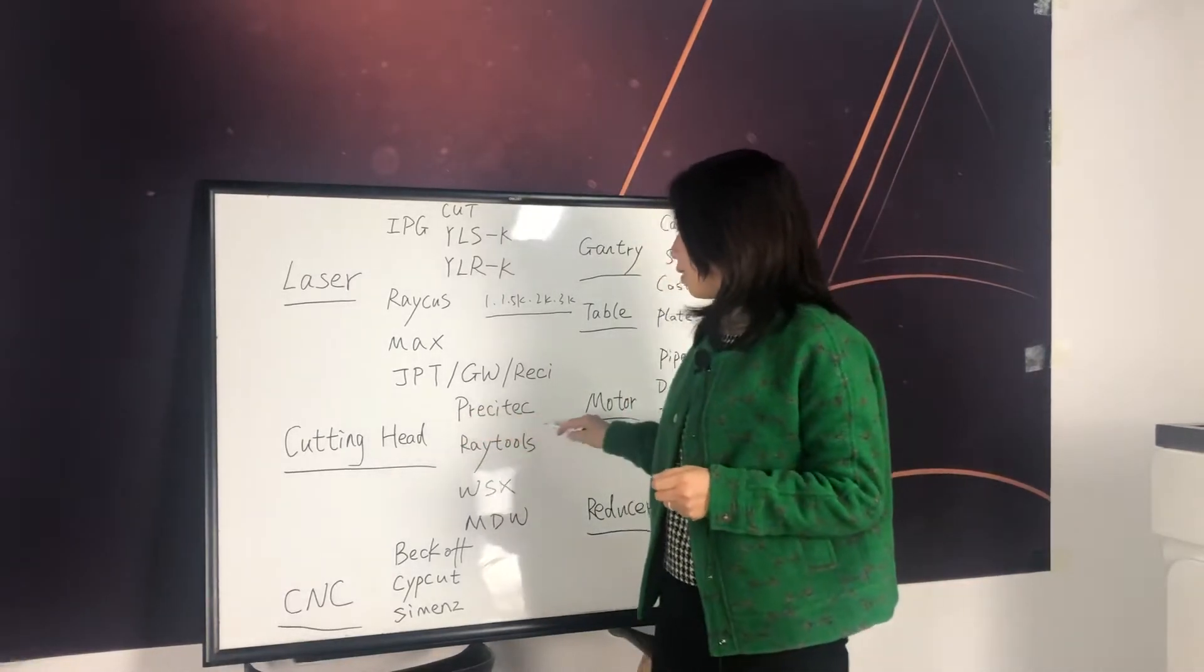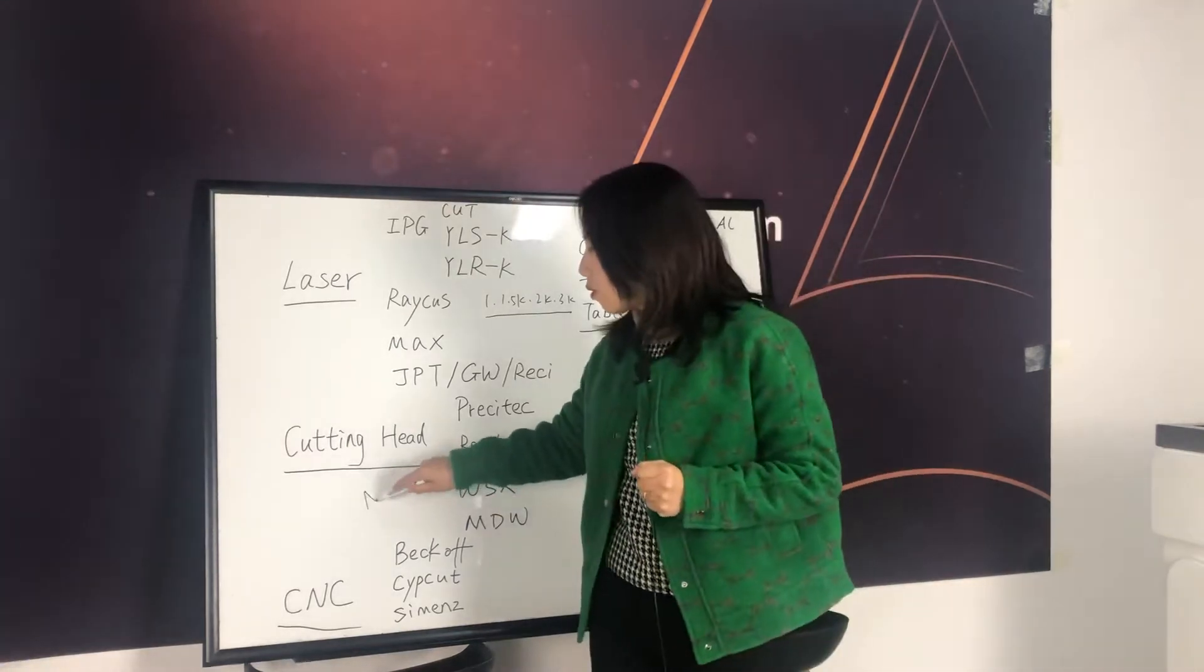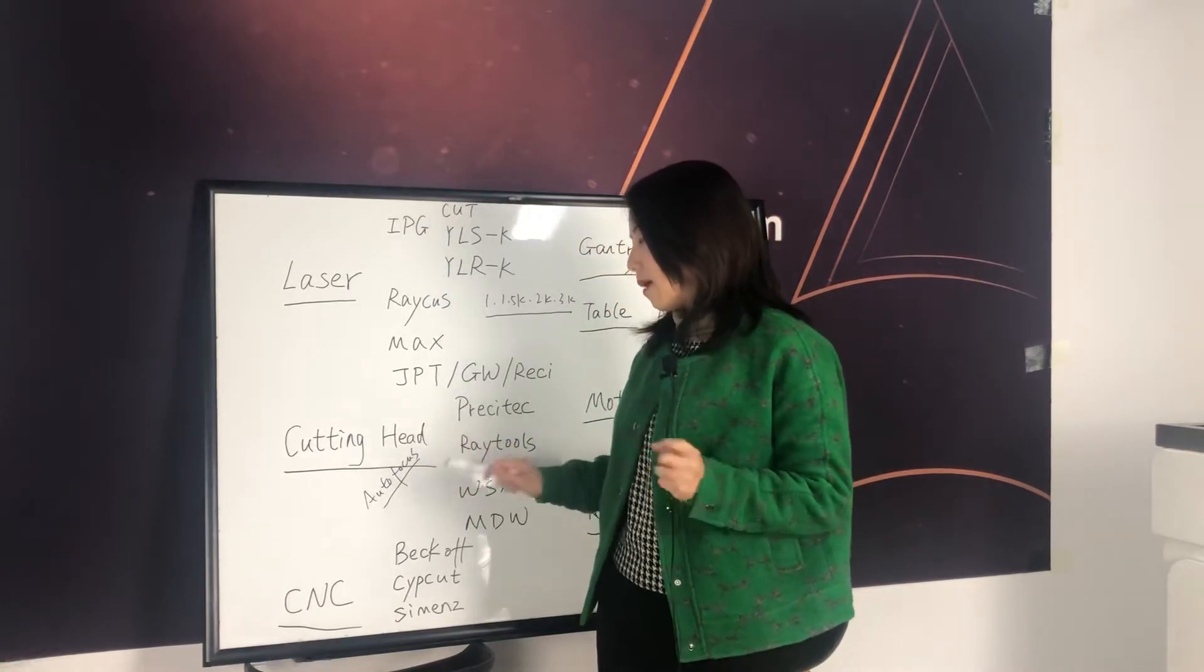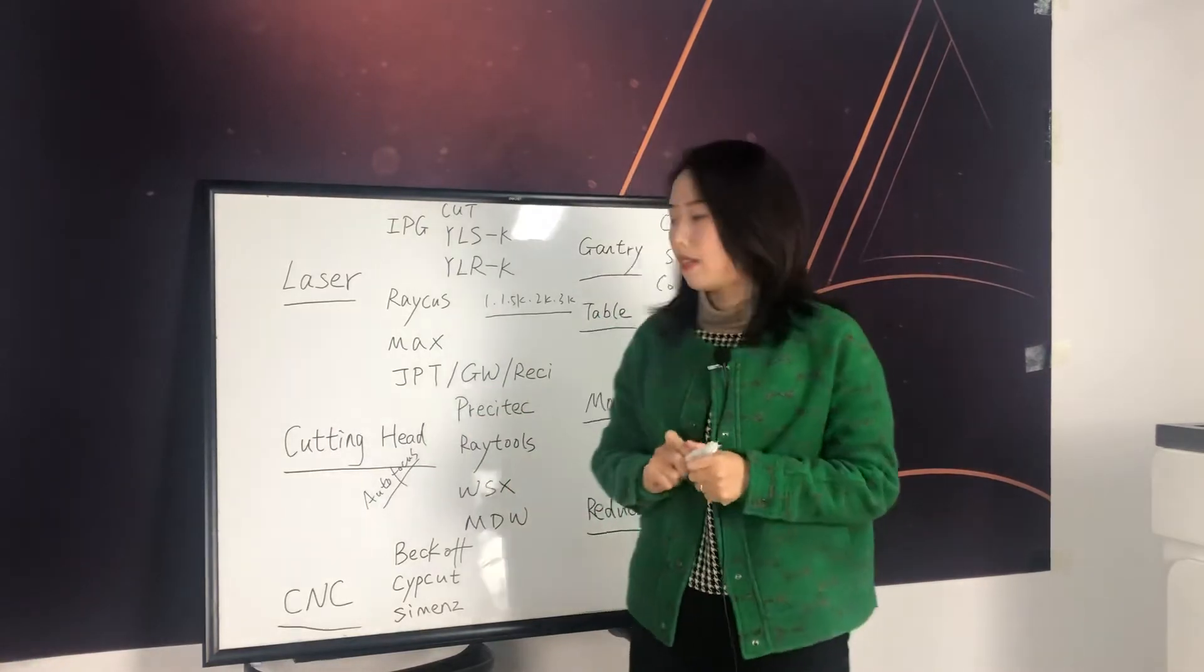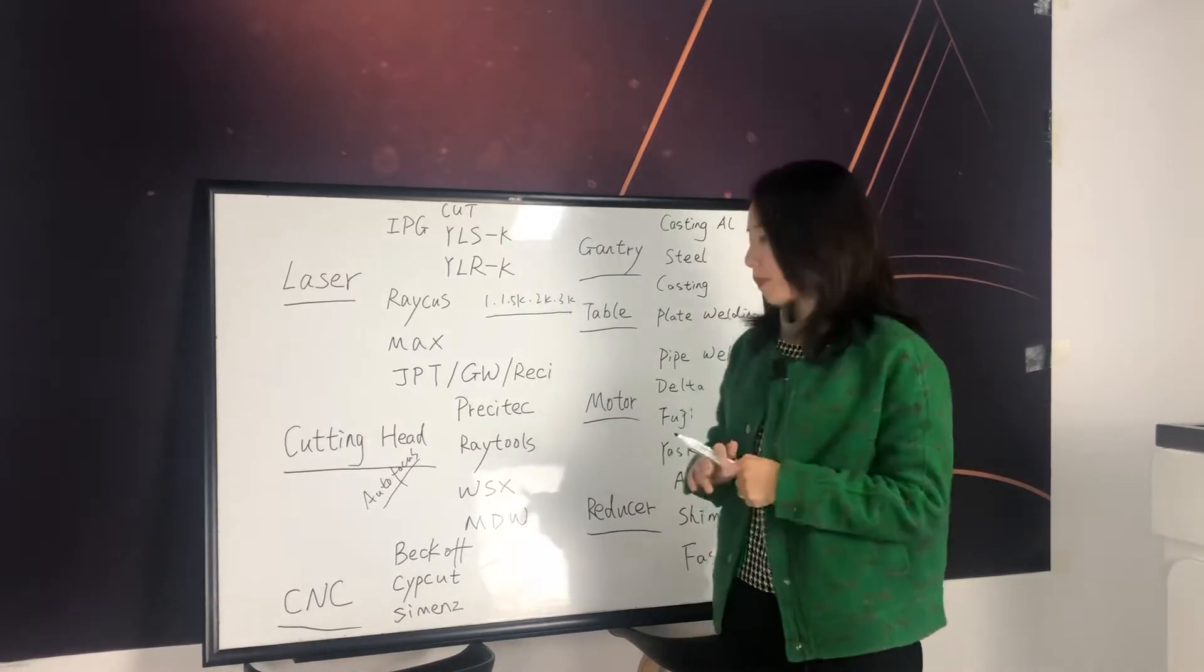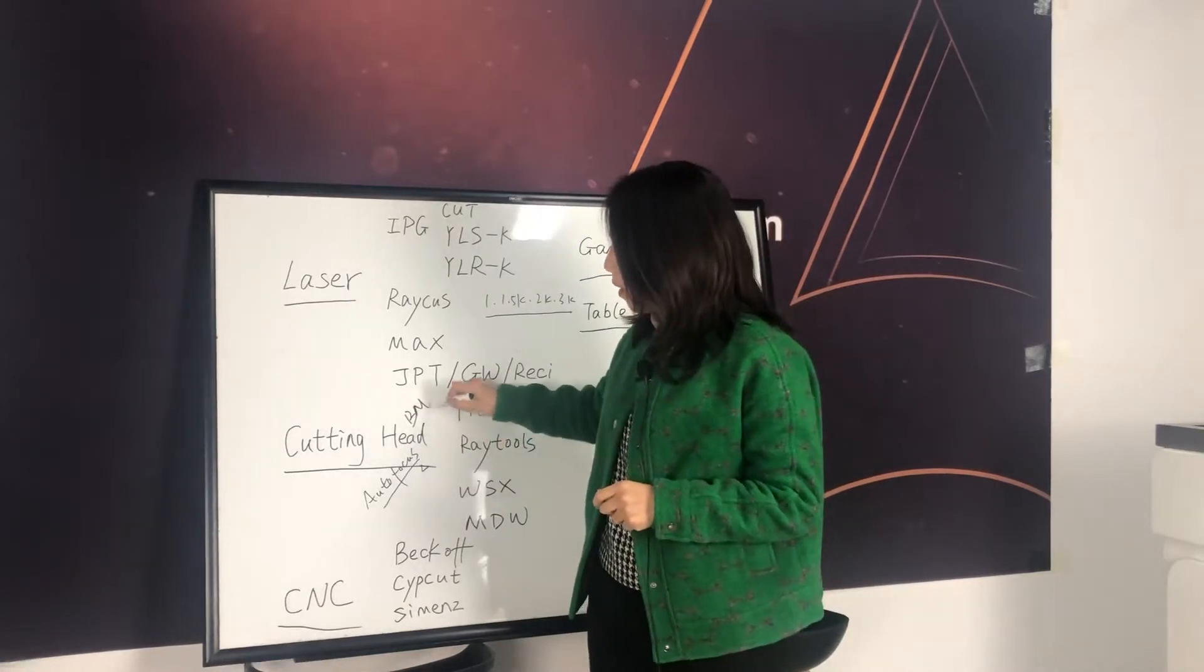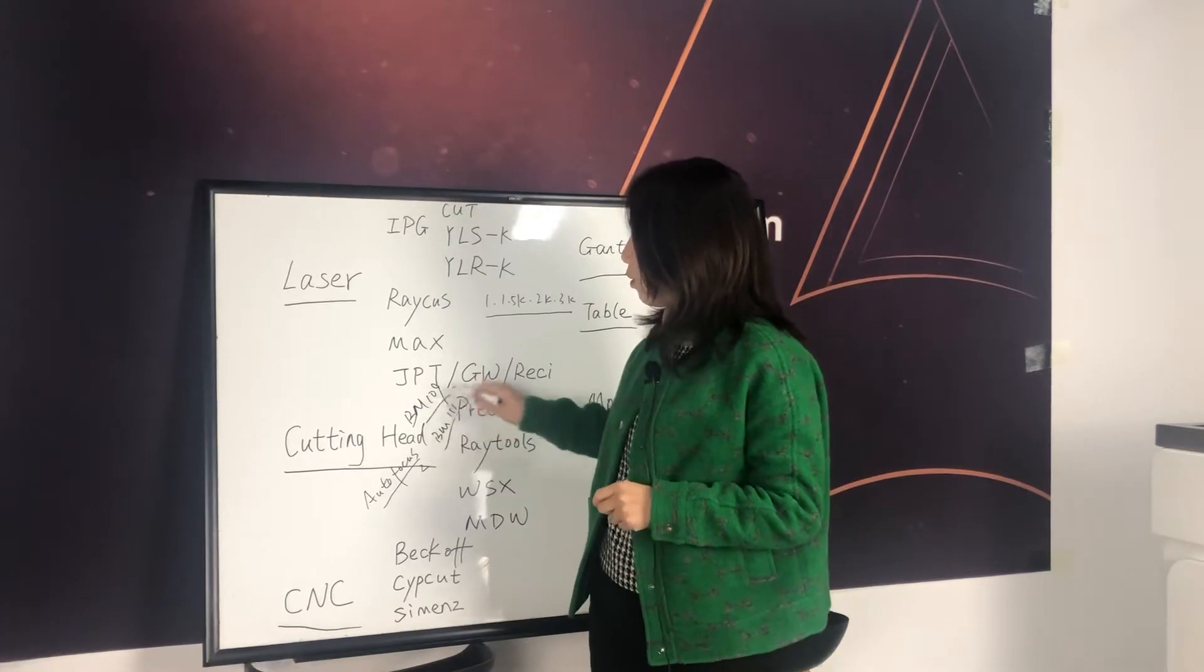Before you're asking the price of the machine, you have to decide which kind of machine you want to buy. You have to decide which kind of laser and which brand you're going to choose and which kind of cutting head you want to choose. Precitec, Raytools, auto focus or manual focus. This year, many people go auto focus. Maybe manual focus was popular in the last two years. But from this year, people start using auto focusing more.